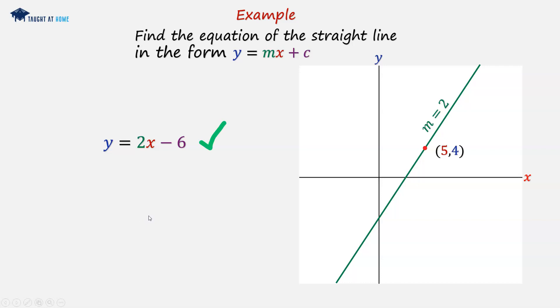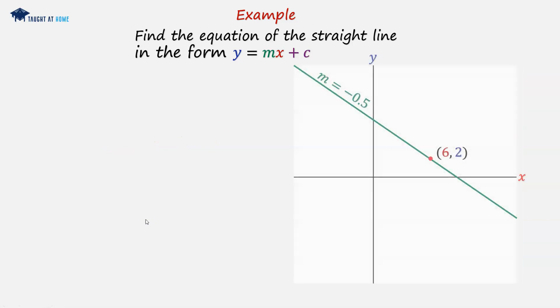Okay, so let's have another go. Example 2. Now we're given a negative gradient, m equals minus 0.5, and we're given a point with the coordinates 6 and 2.